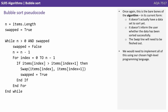This is the bare bones of the algorithm. In its current form, it doesn't actually have any data set to sort, it doesn't inform the user whether the data has been sorted successfully, and the swap line will need to be fleshed out. We would need to implement all of this using one of our chosen high-level programming languages.